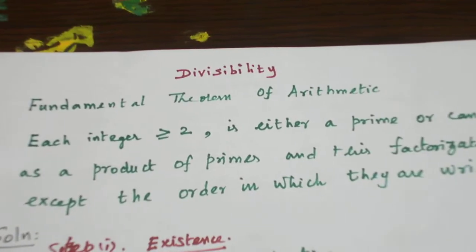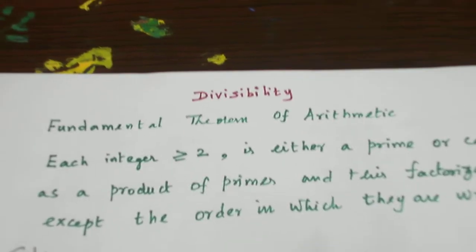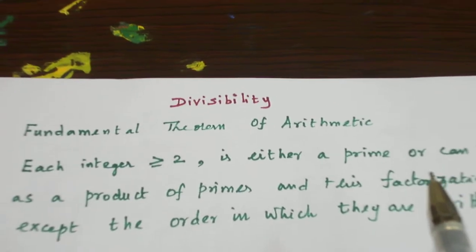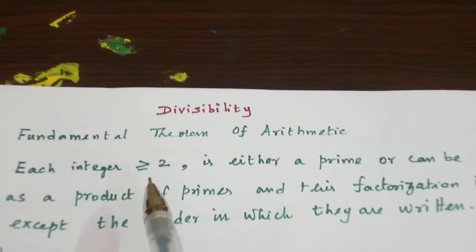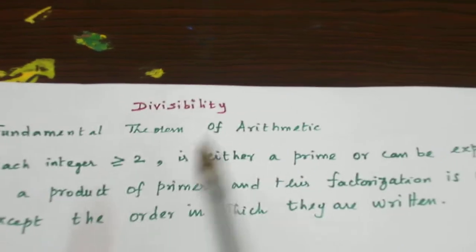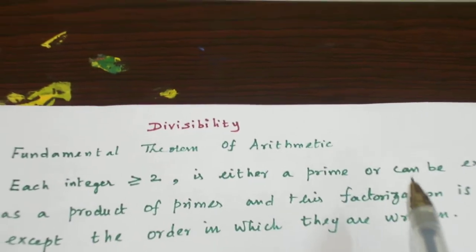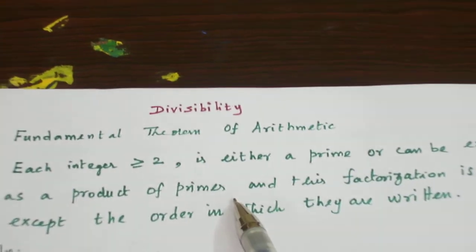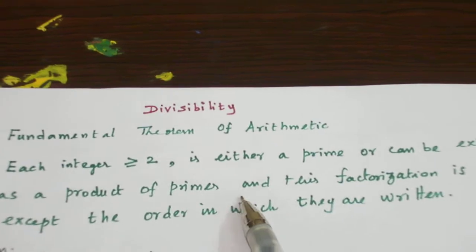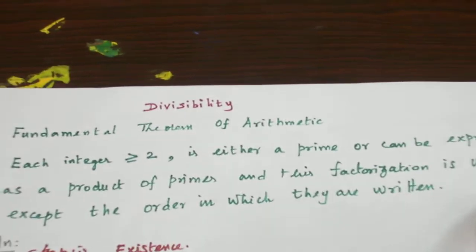Hello students, today let us see a theorem on divisibility called the Fundamental Theorem of Arithmetic. The statement of the theorem is: for any integer greater than or equal to 2, that integer is either a prime number, or if it is not a prime number, it can be written as a product of primes. Moreover, such factorization is unique except for the order in which they are written.